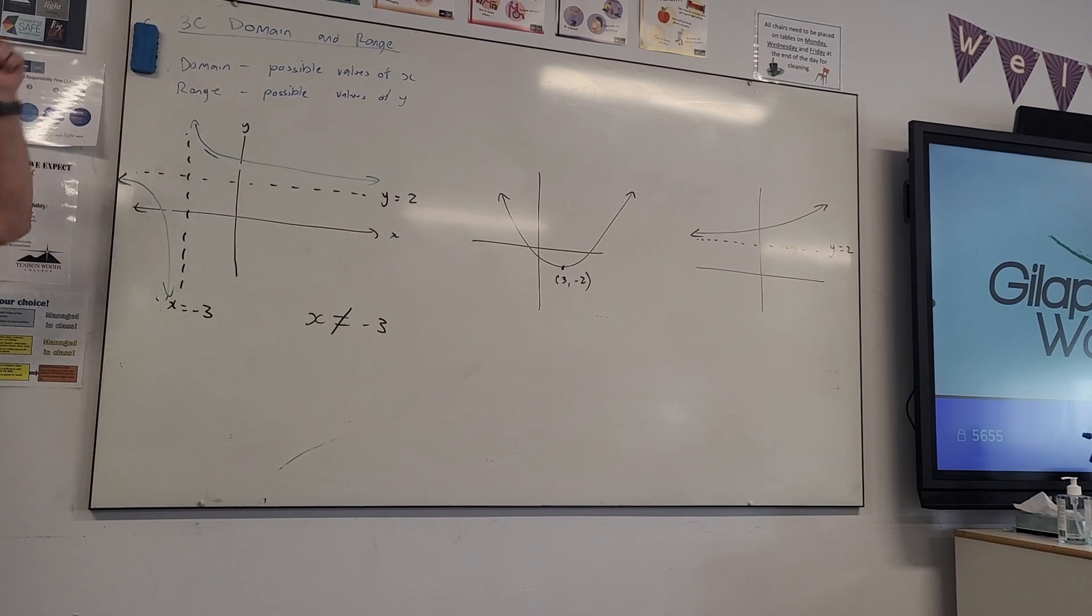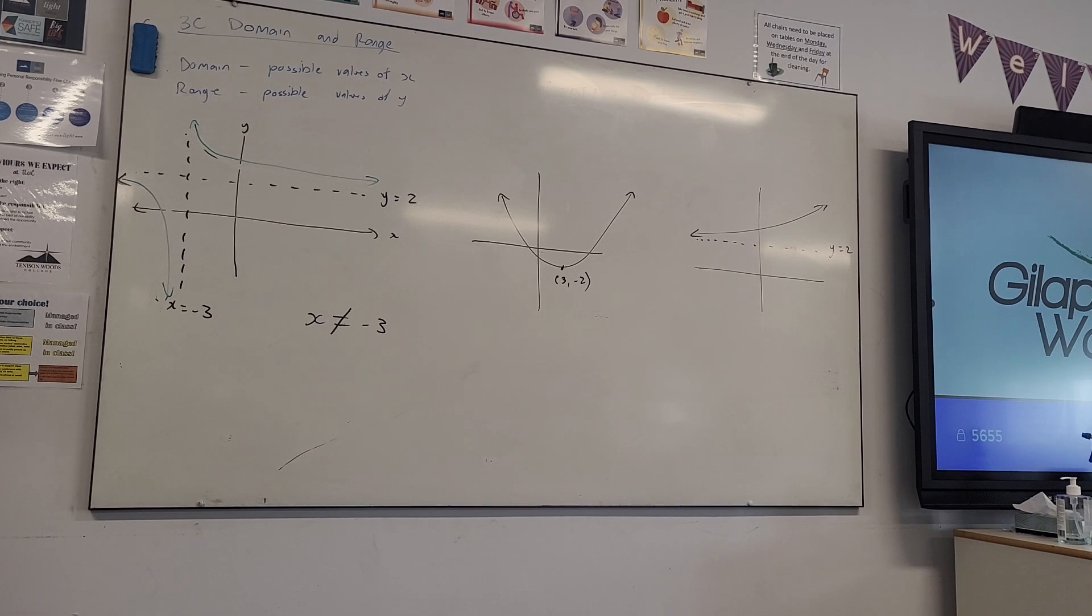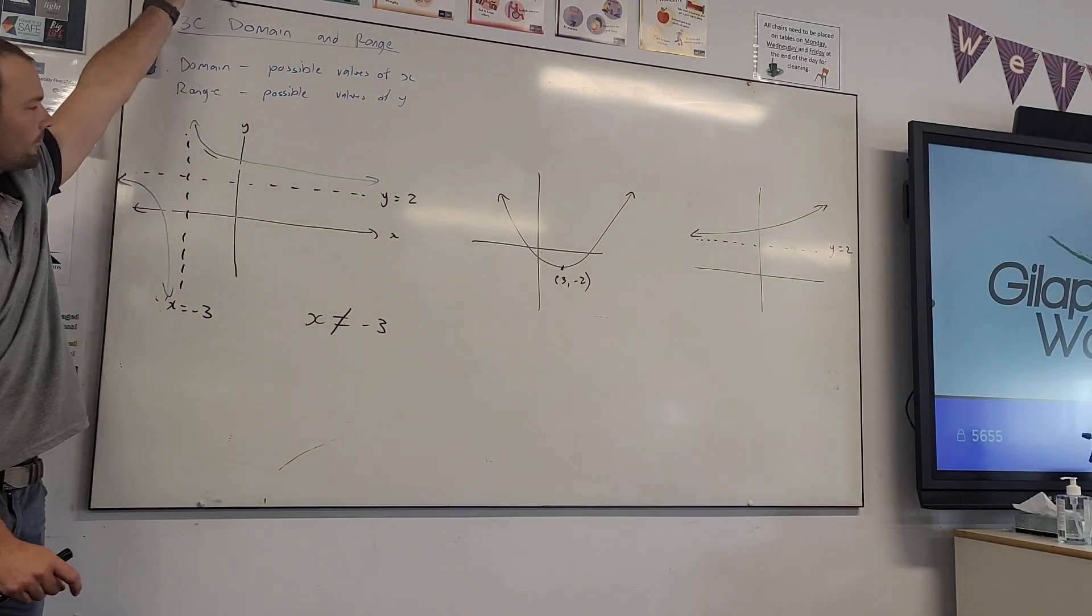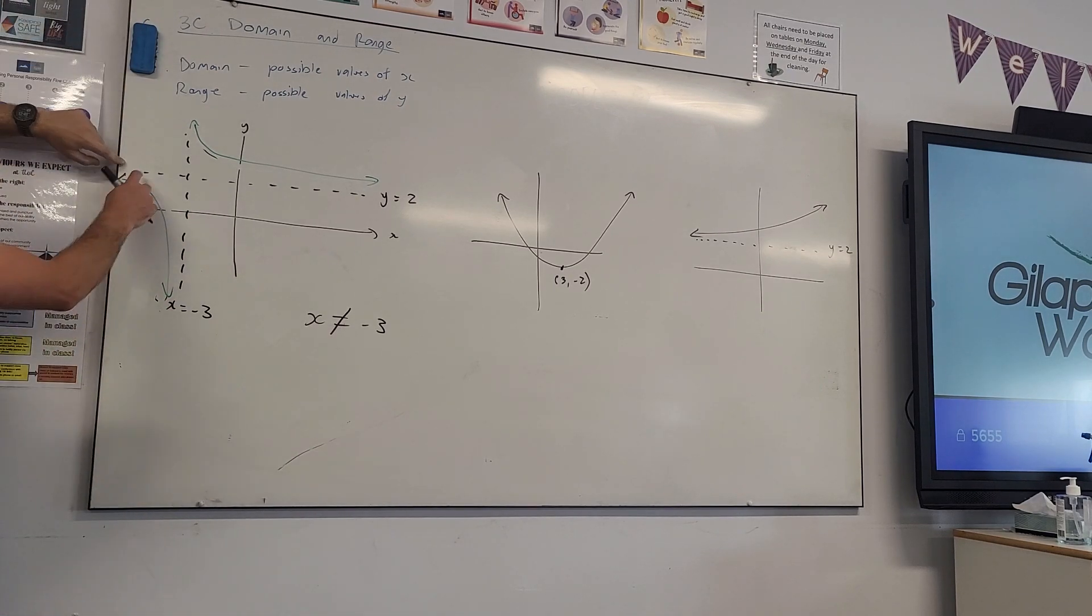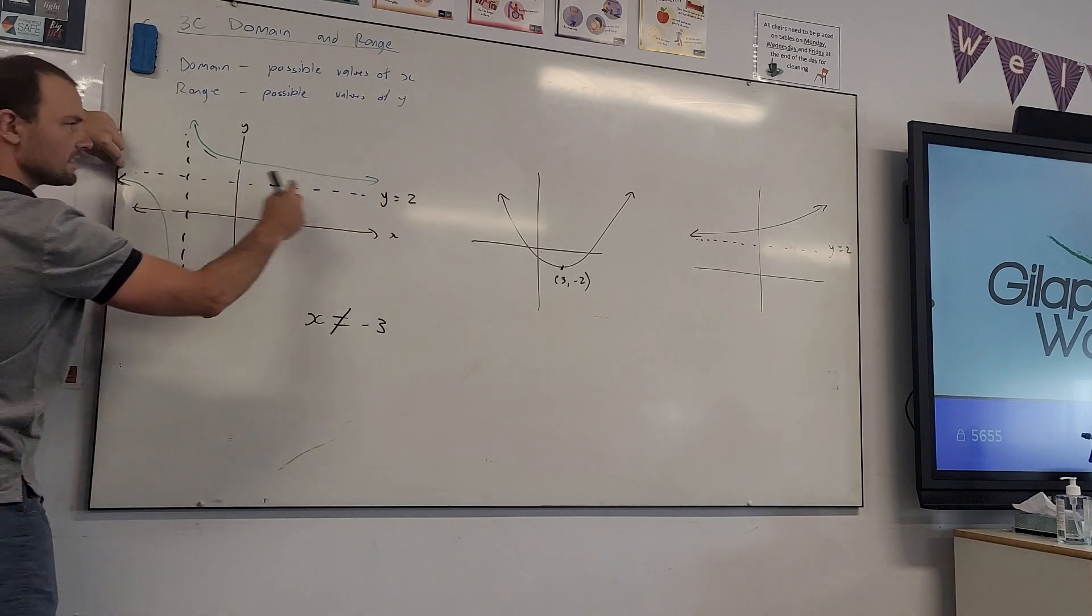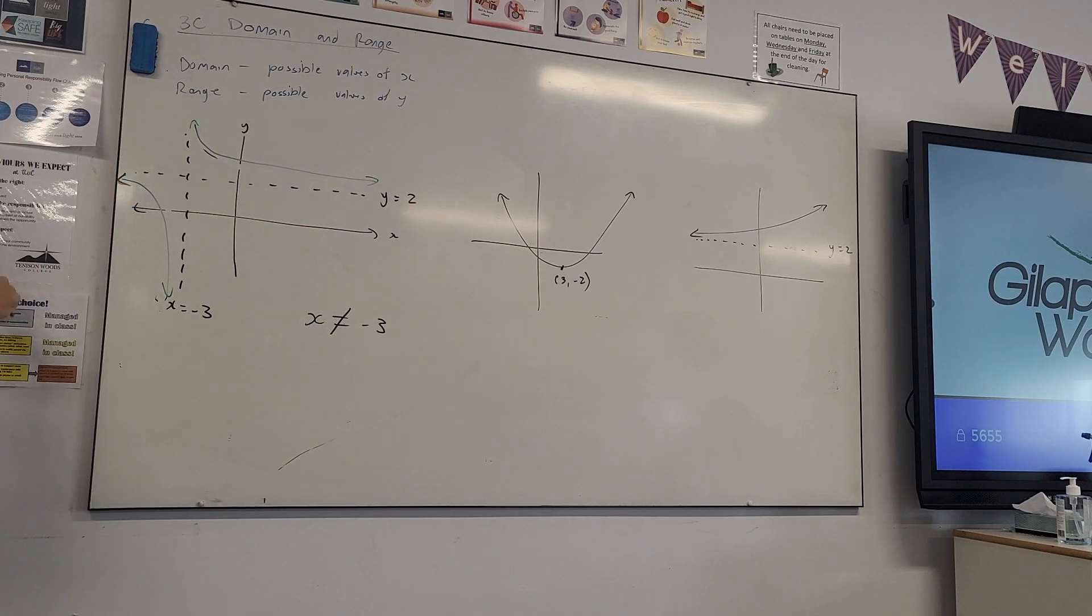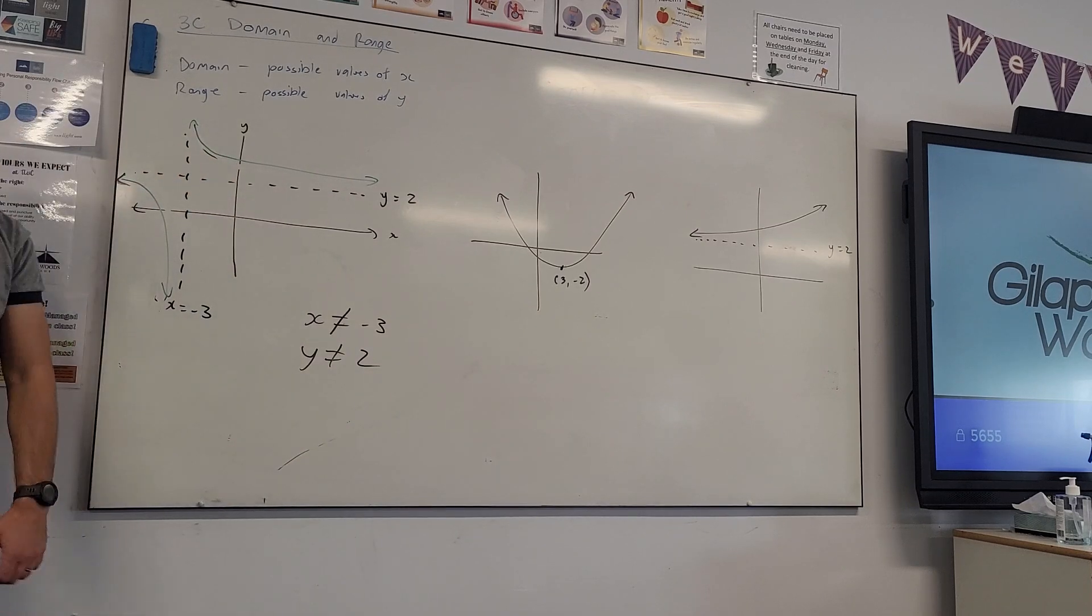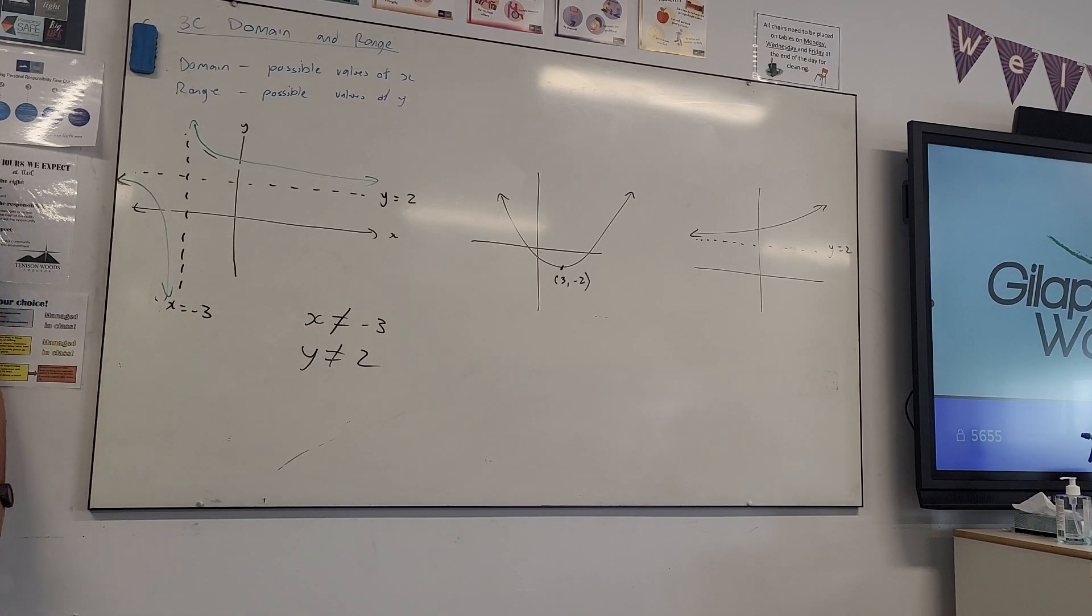Similarly with y, we can see the arrow pointing down, it's going down forever to negative infinity, it's going up forever to positive infinity. It exists everywhere except here, this bottom line tells you it doesn't exist when y is 2, it's getting closer and closer and closer in that direction and closer in this direction but it's never going to reach it, it exists everywhere except positive 2. Anytime there's an asymptote, those are the statements we can make, it doesn't exist at those points.